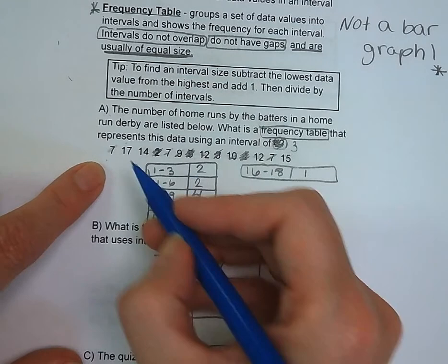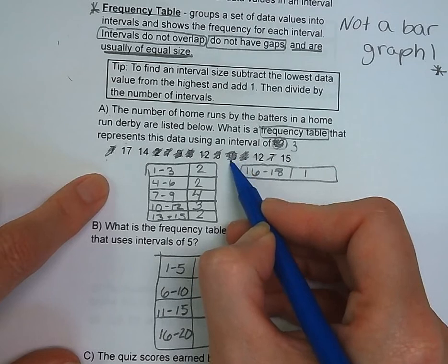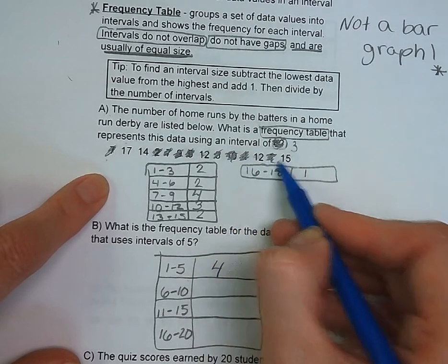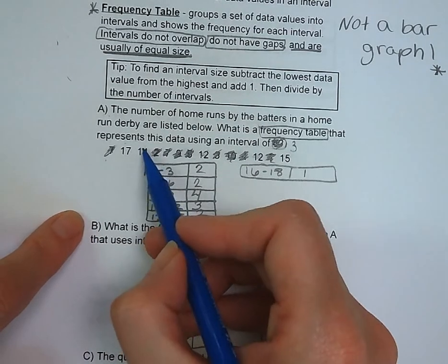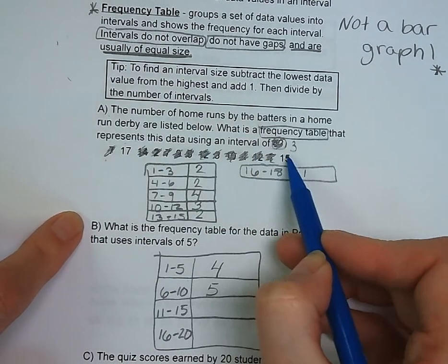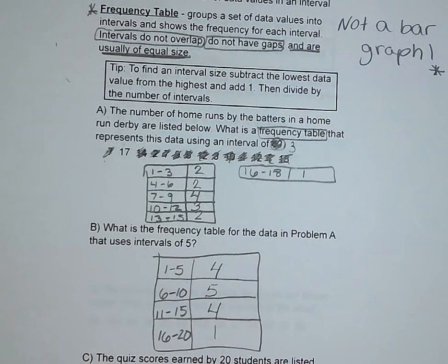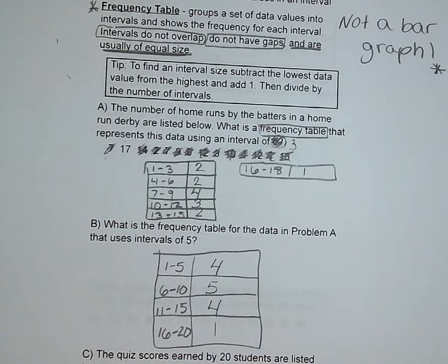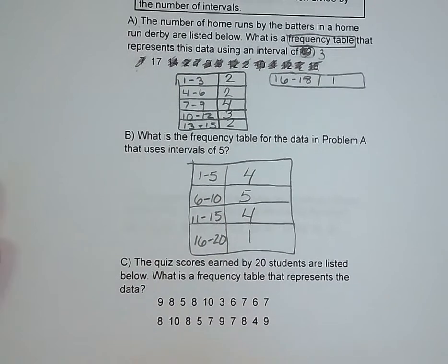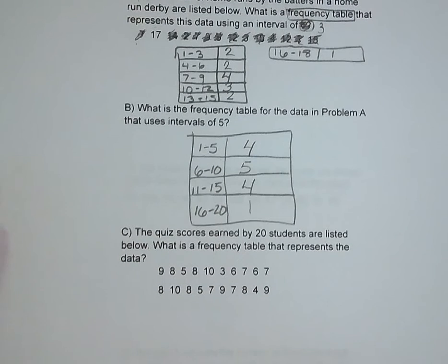When we count them up, between 1 and 5 we have 4 numbers. Between 6 and 10, we have 5. 11 to 15, we've got 4. And 16 to 20, we just have 1. Each of these frequency tables are perfectly valid for this data. They all meet our criteria. They do not overlap, they are the same size, and they have no gaps.